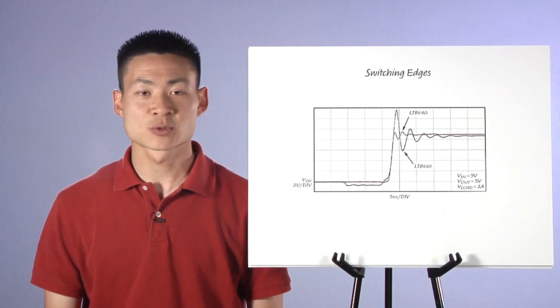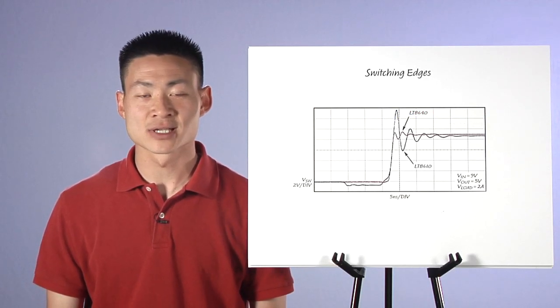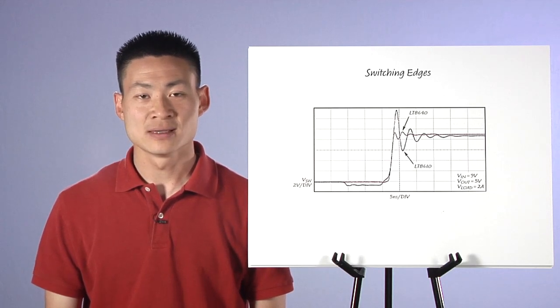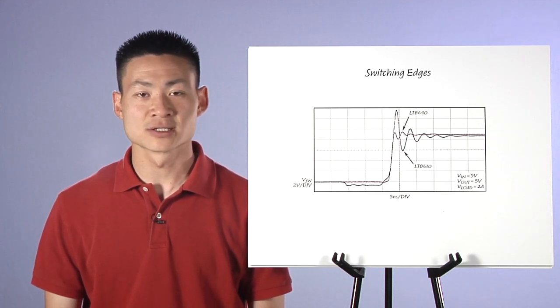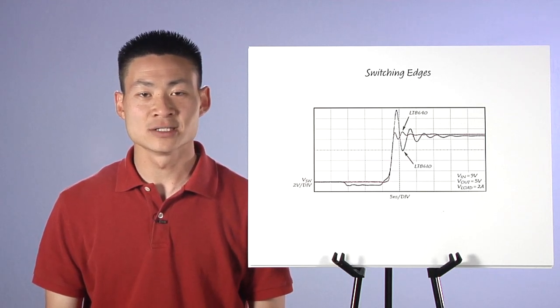LT8640's high speed switching capability allows the use of smaller inductors to minimize board space. It can also safely use small inductors due to its high speed peak current mode and a robust switch design which can tolerate inductor saturation during fault conditions.